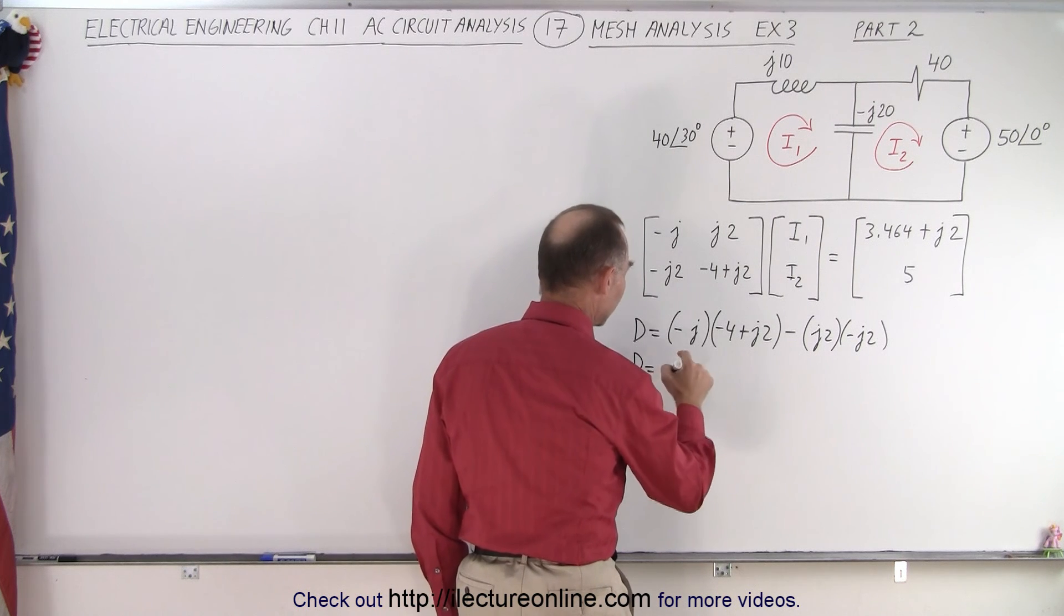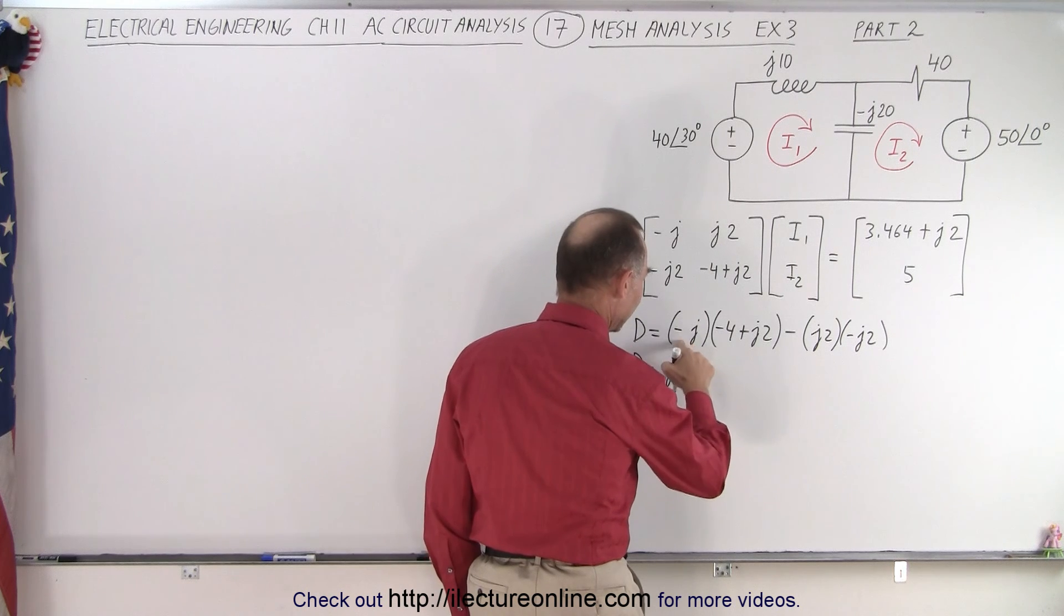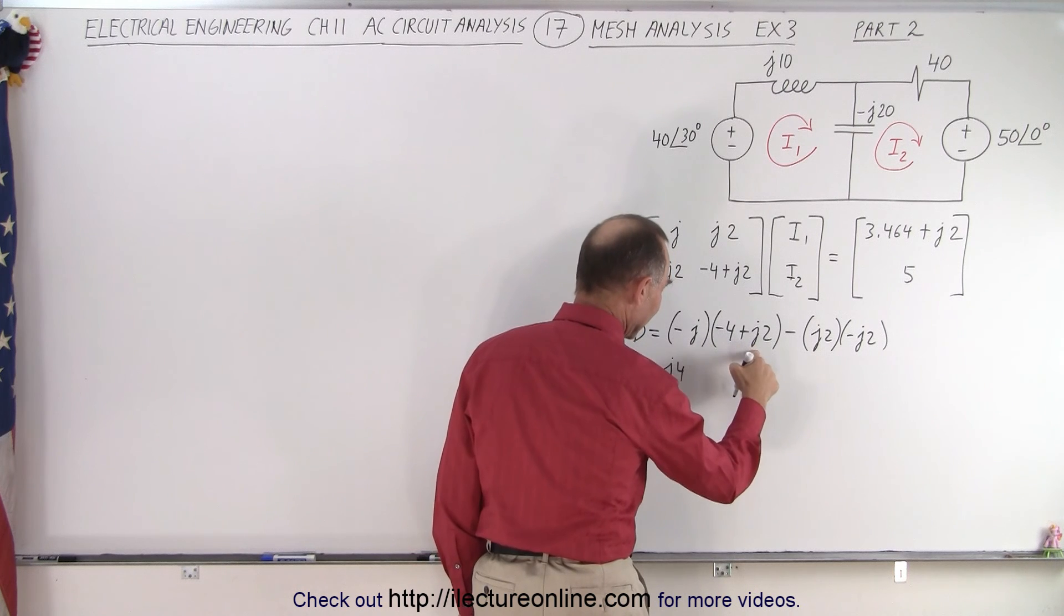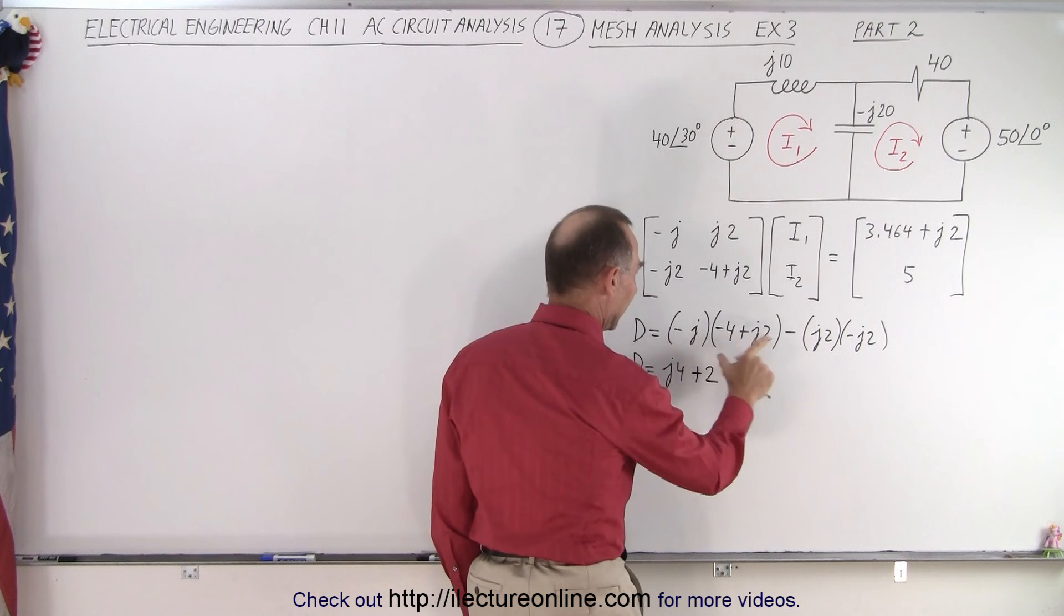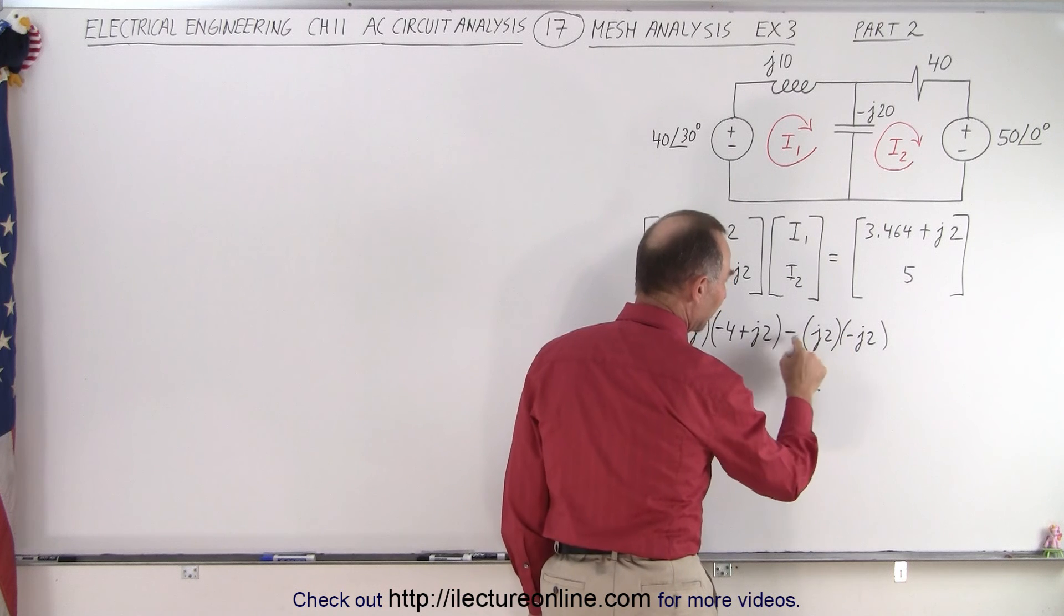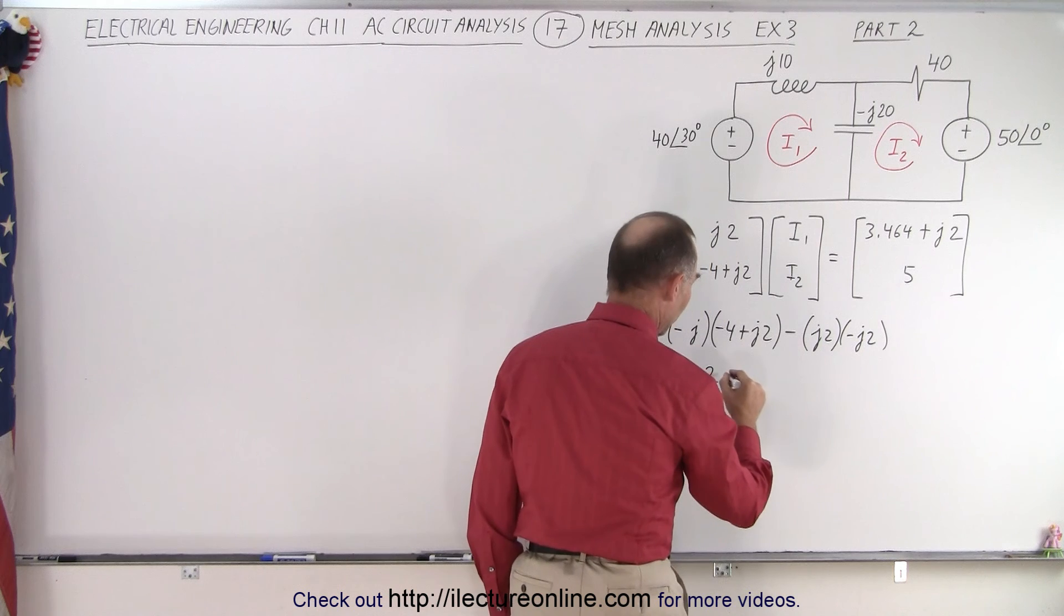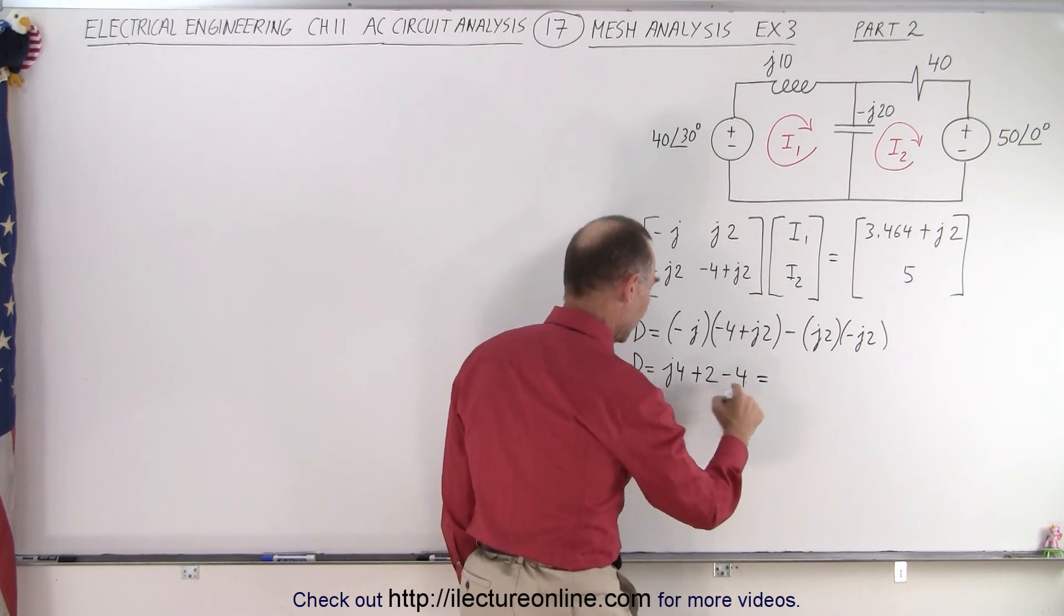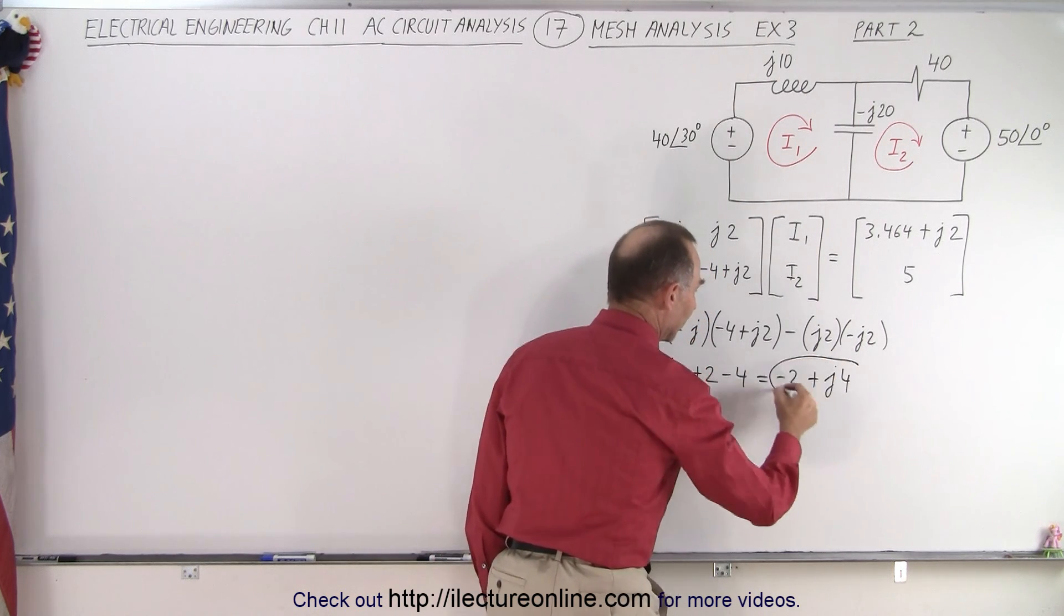So the determinant is equal to minus J times minus 4, that would be plus 4J, so J4, and this times this becomes a minus, but we have a J squared, a J squared is negative 1, so minus times a minus is plus, so plus 2. And then over here we have J2, well, we have a minus times a minus gives me a plus, but a J times J is a J squared, that gives me minus, 2 times 2 is 4, or minus 4. So I'm going to combine that, this is equal to minus 2 plus J4. And that is our determinant.